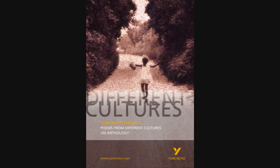The question will usually tell you one of the poems you should write about and let you choose the second one, like this: 'Compare the ways in which poets describe a place in Blessing and in one other poem.' So you need another poem in mind which deals with place. It sounds difficult, but there are lots to choose from.